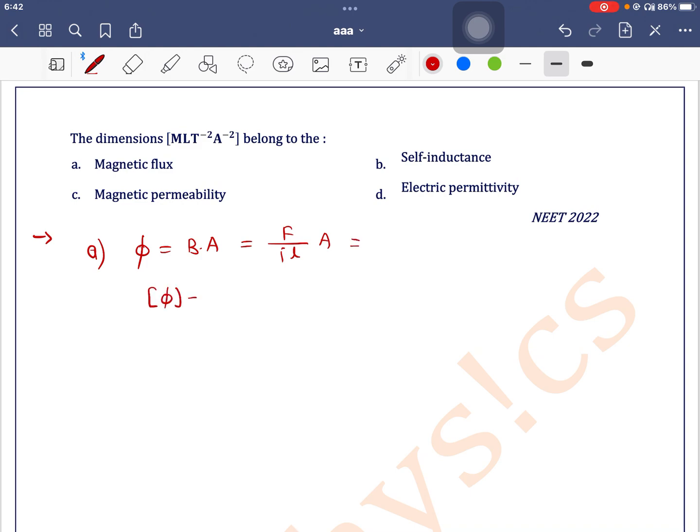So from this we can write dimension of magnetic flux is equal to dimension of F is M¹L¹T⁻², dimension of area is L², dimension of current is I¹, and dimension of length is L¹. So here it will be M¹, this L¹L¹ will cancel out, L²T⁻² and I⁻¹. So it is not matching with the given data, so first one is incorrect.